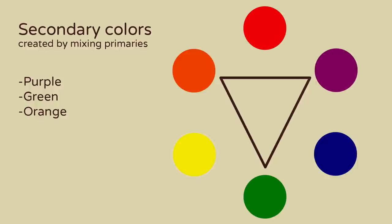The secondary colors — purple, green, and orange — are created by mixing primary colors. Red and blue makes purple, blue and yellow makes green, and yellow and red makes orange.